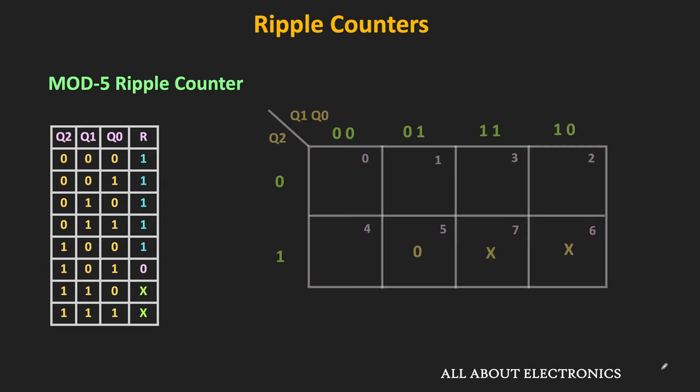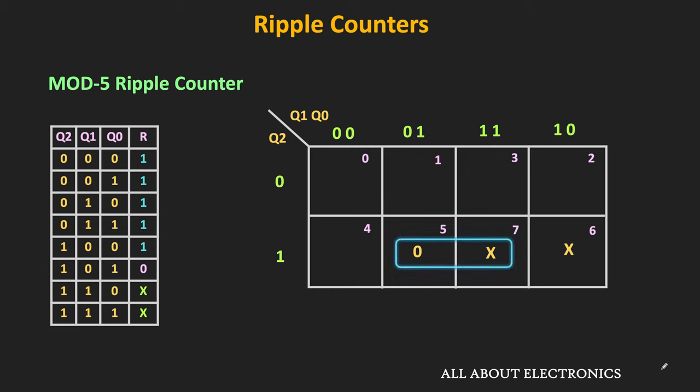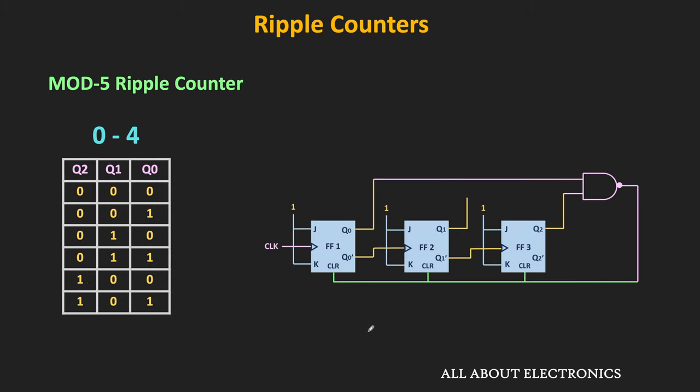The minterm m5 is equal to 0, while minterms m6 and m7 are don't care terms. We can combine minterm m5 with m7, and this group corresponds to Q2·Q0. Since we are combining zeros, we can say R' = Q2·Q0, or R = (Q2·Q0)̄. We can implement this function with the help of a NAND gate by applying Q2 and Q0 as inputs, and connecting the output of the NAND gate to the clear input.